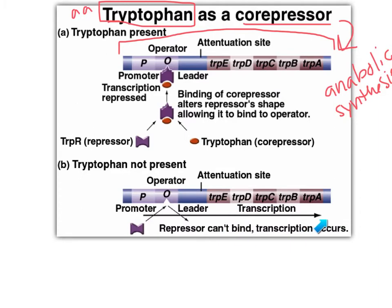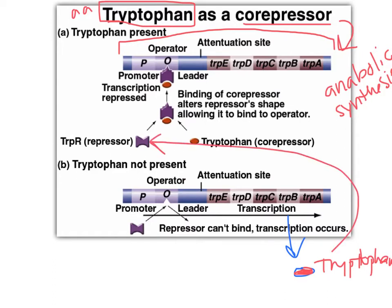So if we get transcription of this operon, we make tryptophan. If we don't get transcription, we don't make any. So down here where transcription happens, the product is tryptophan — which then, once you make tryptophan, it interacts with the trp repressor, which almost always these repressor molecules or the regulatory genes are constitutive. So that's always on. When tryptophan is transcribed, it binds. Only when these two are together can it bind the operator. What happens when it binds the operator?